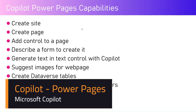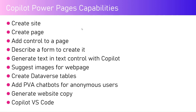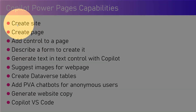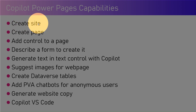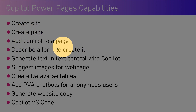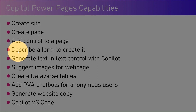In this video I'm going to talk about Copilot Power Pages capabilities — how we can better utilize Copilot for rendering Power Pages content or easing our effort while building a Power Pages site. The first thing you can do is use Copilot to create a site right from the start, before you even hit the URL for Power Pages. Once the site is created, you can request actions like creating a page, adding controls, or describing a form to create it, and AI will start building that scaffolding.